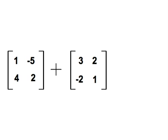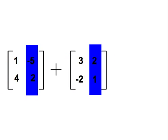In order to add matrices together, they must have the same dimensions. Here we have two matrices that have two rows and two columns each.